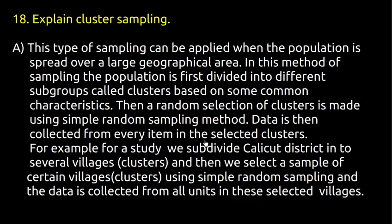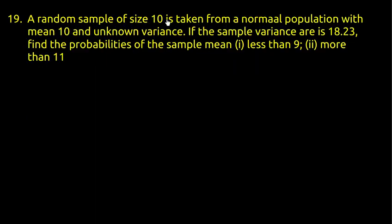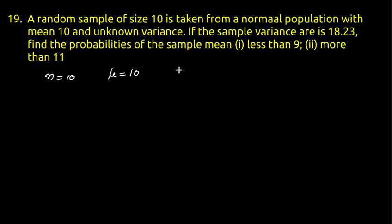Problem: A random sample of size n equal to 10 is taken from a normal population with mean 10 and unknown variance. If the sample variance is 18.23, find the probabilities that the sample mean is less than 9 and more than 11. The sample size n is 10, the population mean is 10, and the population variance is unknown while the sample variance equals 18.23.